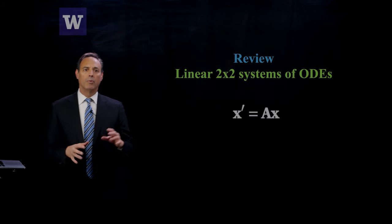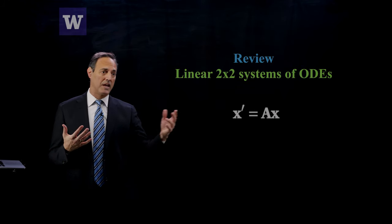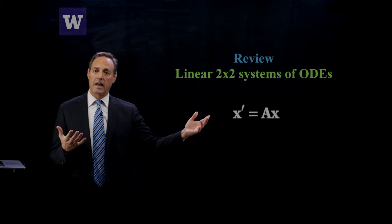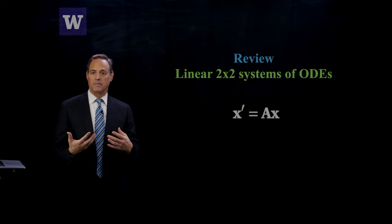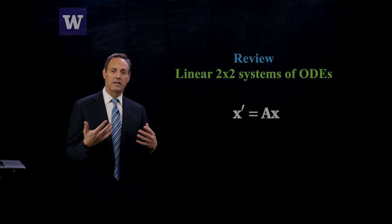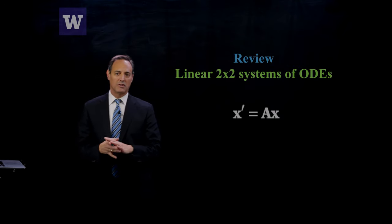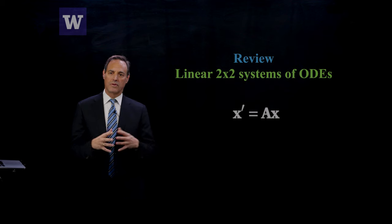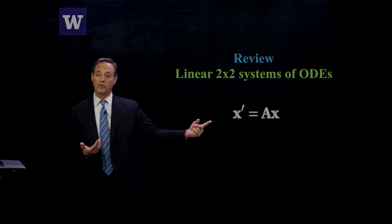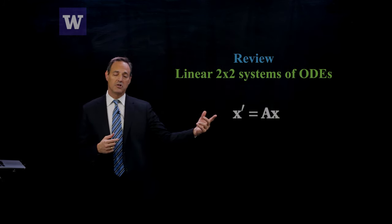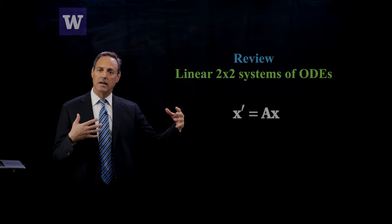Let's start off with a simple review of two by two differential equations that are linear and constant coefficient. The easiest way to write that down is x prime equals Ax, where A is a two by two matrix. There are only certain things that can happen in such a simple system. We have analytic solution techniques available to us, and second order differential equations can always be written as a system of two first order differential equations. This is the generic representation for looking at dynamics and the idea of a phase plane.